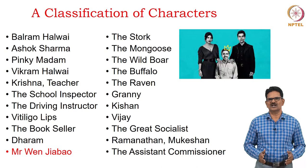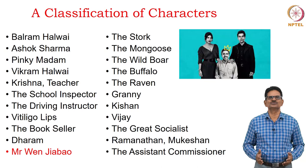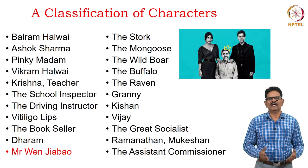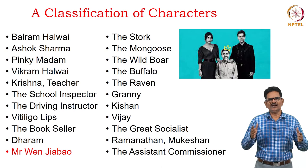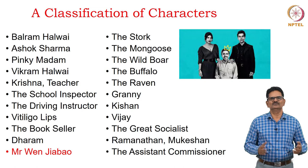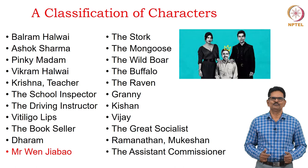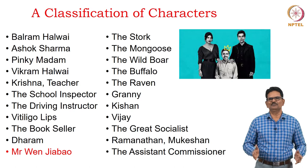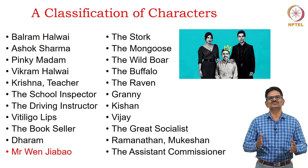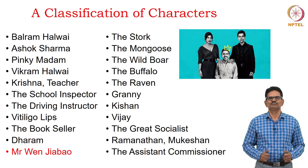The driving instructor teaches Balram how to drive and become a taxi driver. When Balram goes to Delhi, he has a friend in Vitiligo Lips — his name is not given but he is a kind and supportive friend. Two booksellers also teach something to Balram. Dharam, a cousin of Balram, comes to Delhi to get a job and send money home. A very important character is Mr. Wen Jiabao — the whole novel is written as a letter to him, the Chinese premier who visited India in 2005.